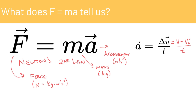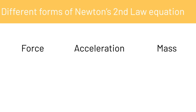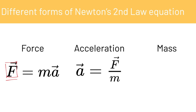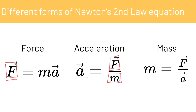This is Newton's second law in equation format. Solving F equals MA for different variables allows us to find different information. If we're given mass and acceleration, we can find force. If we know force and mass, we can find acceleration. Similarly, if we know force and acceleration, we can find mass.